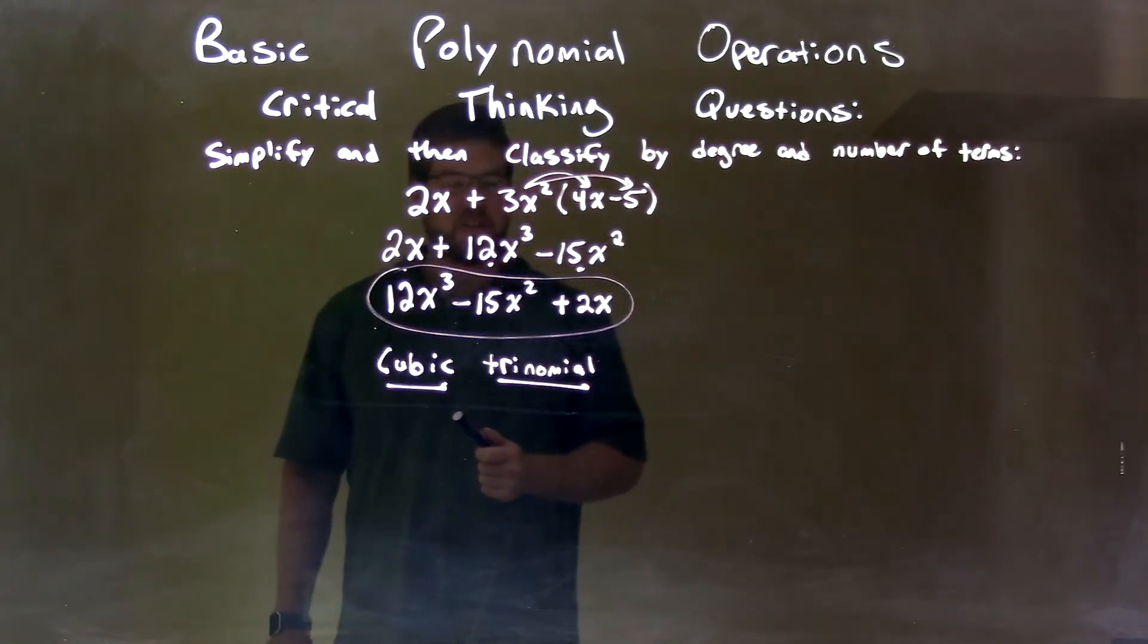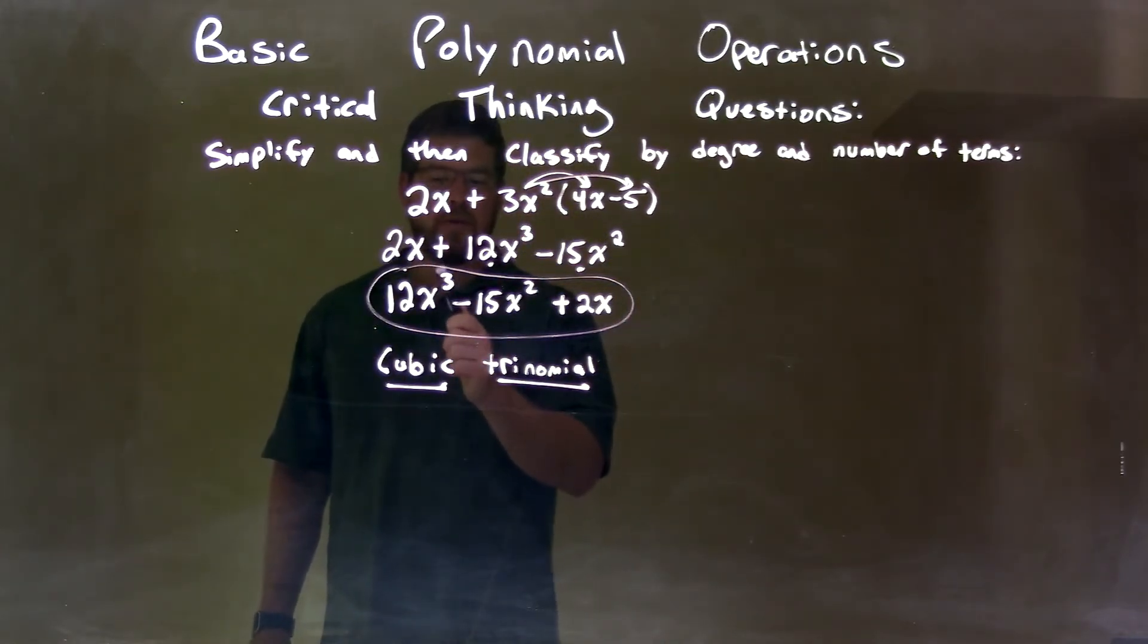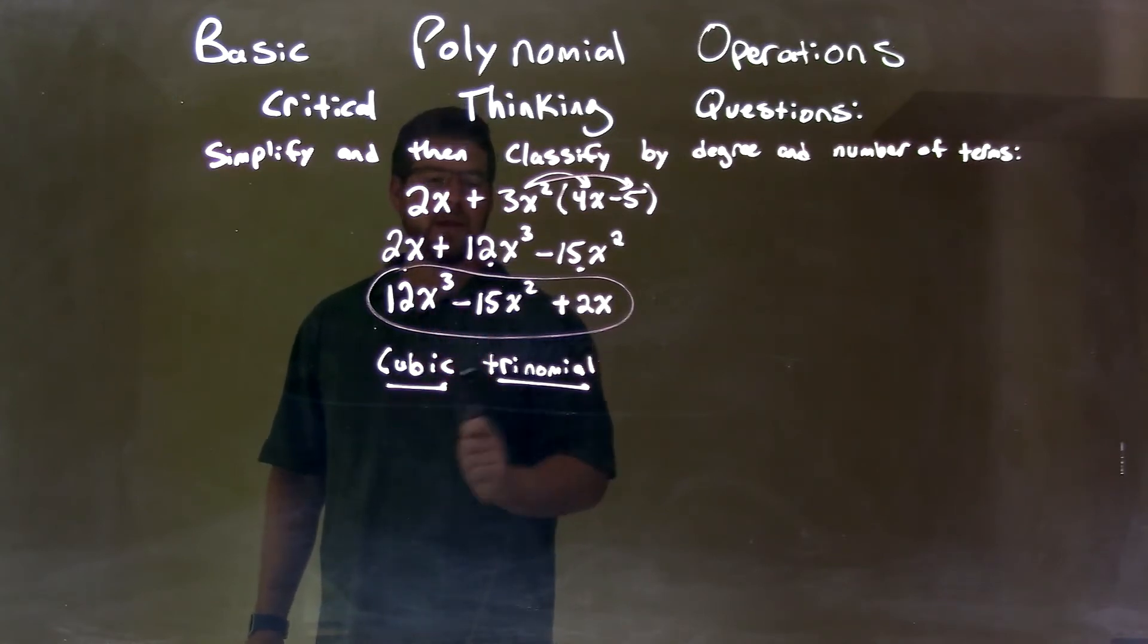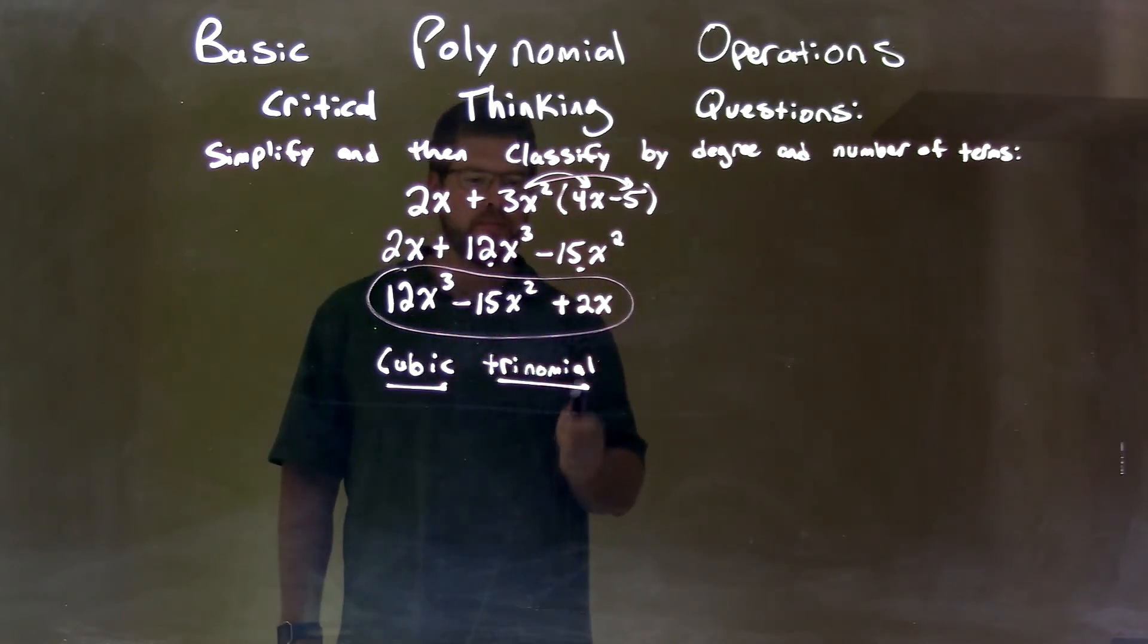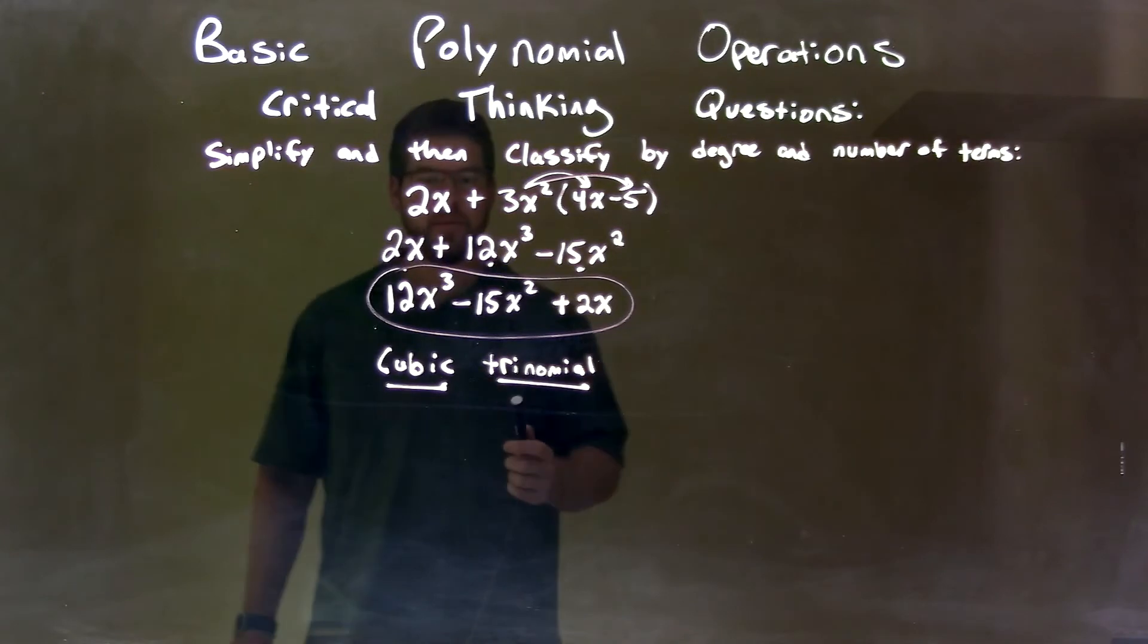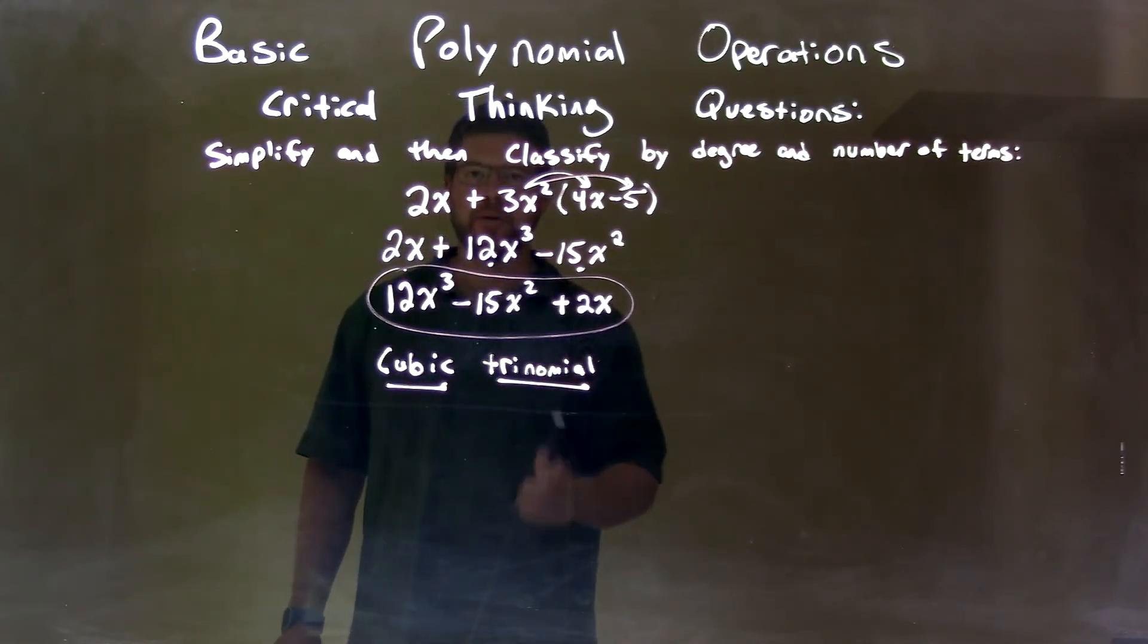Now, we had to classify this. Well, our highest degree is the third power, so that's a cubic. So we have a cubic right there, cubic, highest degree. Then we have three distinct terms. The three different terms means the trinomial. So our classification here of this polynomial is a cubic trinomial, and that is our final answer. Thank you.